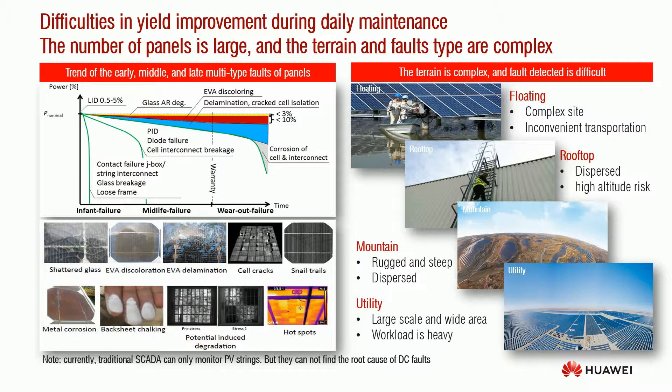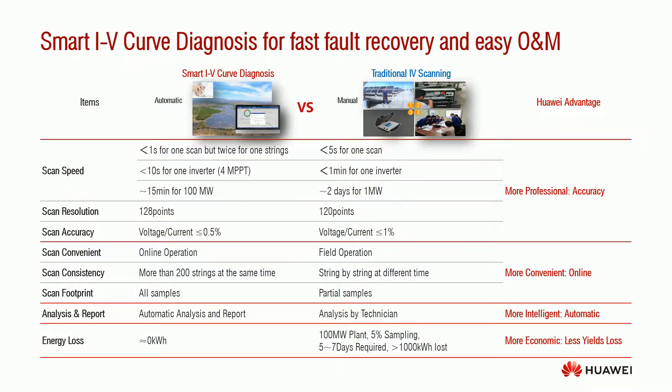Hotspots occur when shading or non-uniformity occurs on one module. This creates a very high reverse bias across a very small region, which causes high temperature and so-called hotspots. When the hotspots last for a period, the breakdown of a solar cell encapsulated inside the module occurs, which probably leads to fire.